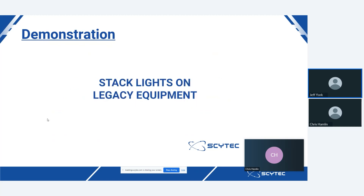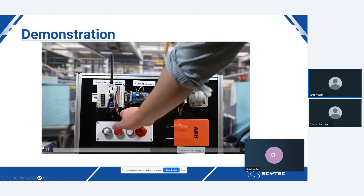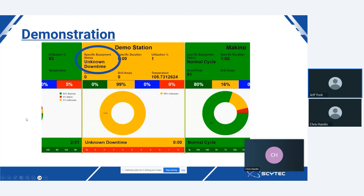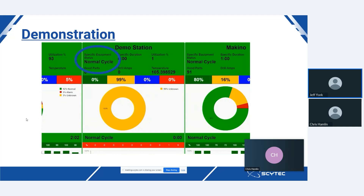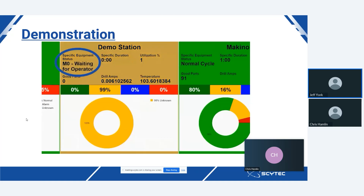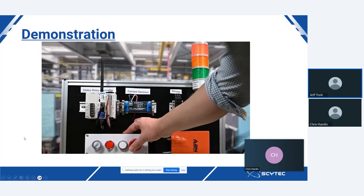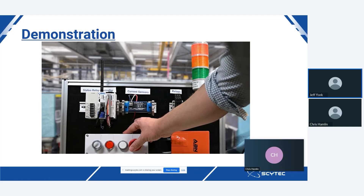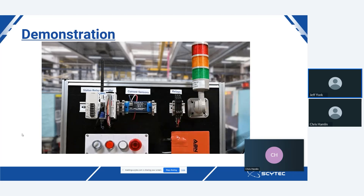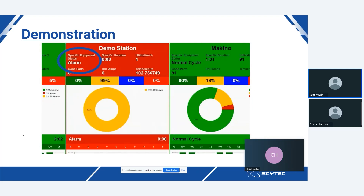Next we are going to discuss stack lights on legacy equipment. Here pressing the in-cycle button on a stack light controller, you can see the green light engage — showing it going from unknown downtime to a normal cycle, simulating a machine running. Next, hitting an M1/M0 stop with that flashing orange, and in real time you will see this update inside SciTech Data Exchange as an M0 'waiting for operator' — maybe an employee going on a lunch break, a changeover, or removing a part. Finally, engaging an alarm: you see the blinking red light indicating an alarm, which also reflects in real time inside SciTech Data Exchange.